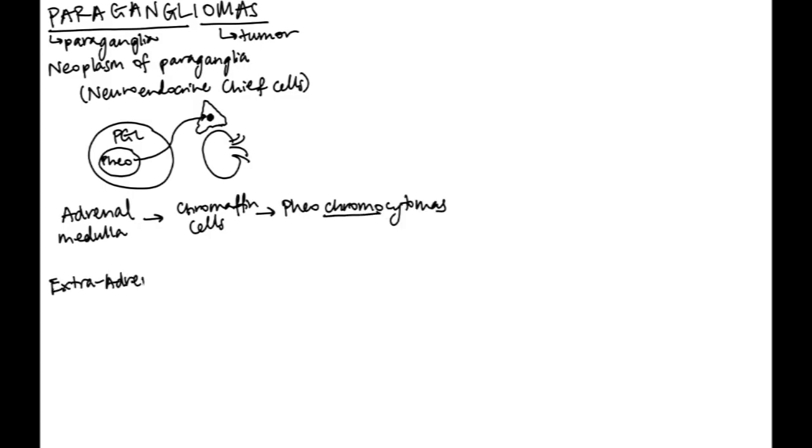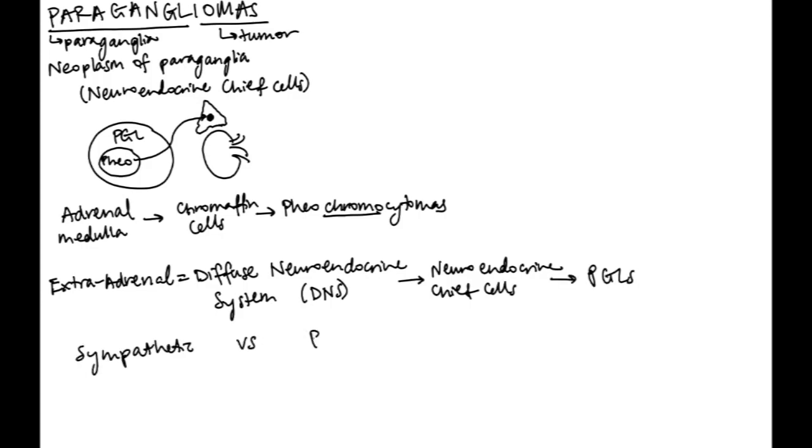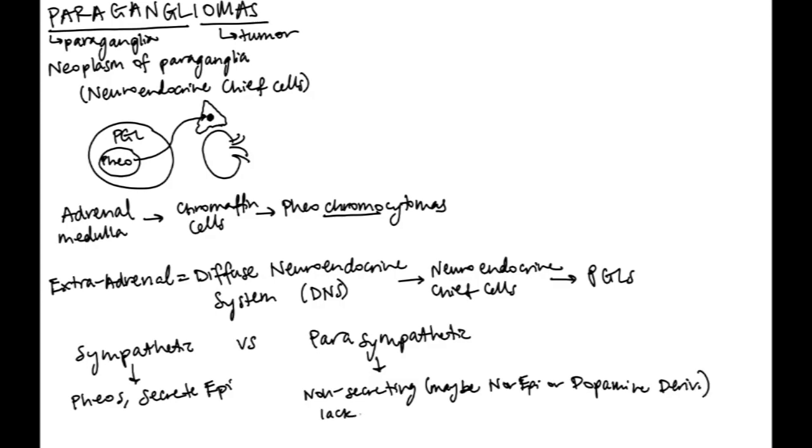When paragangliomas form in the extraadrenal paraganglion system, which is called the diffuse neuroendocrine system, they're just called paragangliomas. These can occur in both the sympathetic and parasympathetic diffuse neuroendocrine systems. In the sympathetic system, you can get pheochromocytomas which secrete epinephrine. But in the parasympathetic paraganglia, they tend to be non-secreting, or if they do secrete, it tends to be norepinephrine or a dopamine derivative because the parasympathetic paraganglia lack phenylethanolamine N-methyltransferase, which converts norepinephrine to epinephrine.